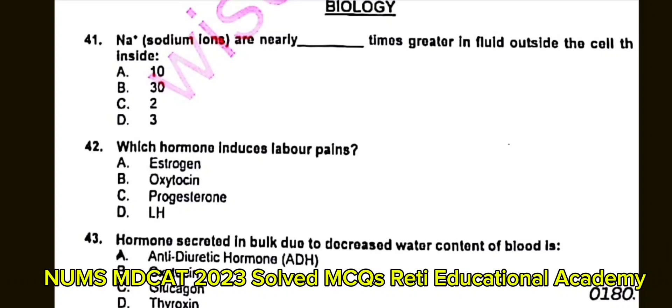Question number 41: Sodium ions are nearly dash times greater in fluid outside the cell compared to inside. A. Ten. B. 30. C. 2. D. 3. The correct answer is A: Ten.